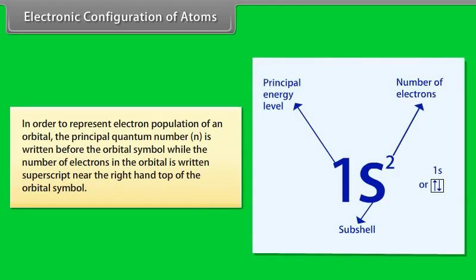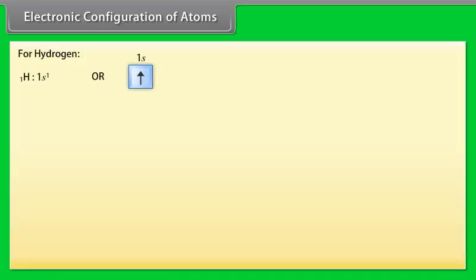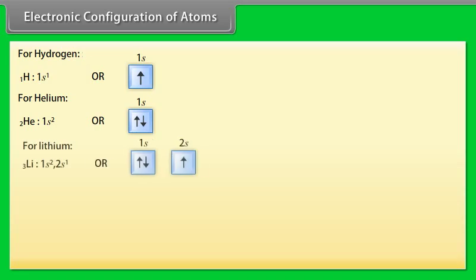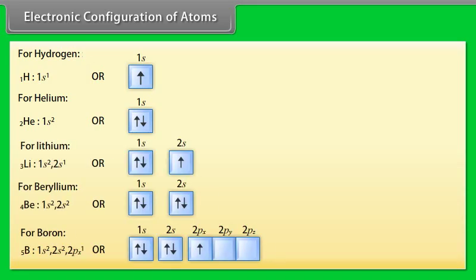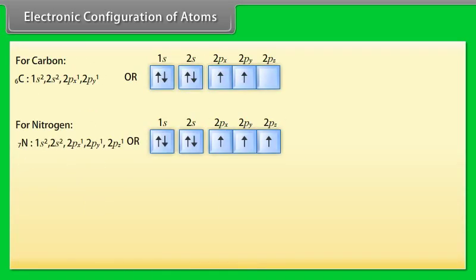Electronic Configuration of Atoms: To represent the electron population of an orbital, the principal quantum number N is written before the orbital symbol, while the number of electrons in the orbital is written as a superscript to the right. For example, two electrons in the S orbital of the first energy level is written as 1S². Electronic configurations are listed for hydrogen, helium, lithium, beryllium, boron, carbon, nitrogen, and oxygen.